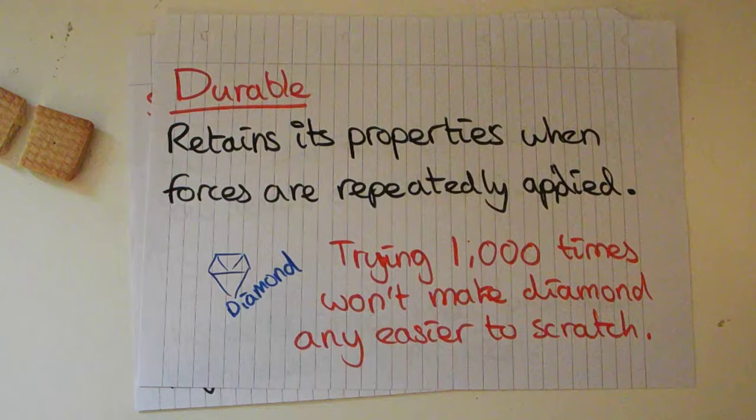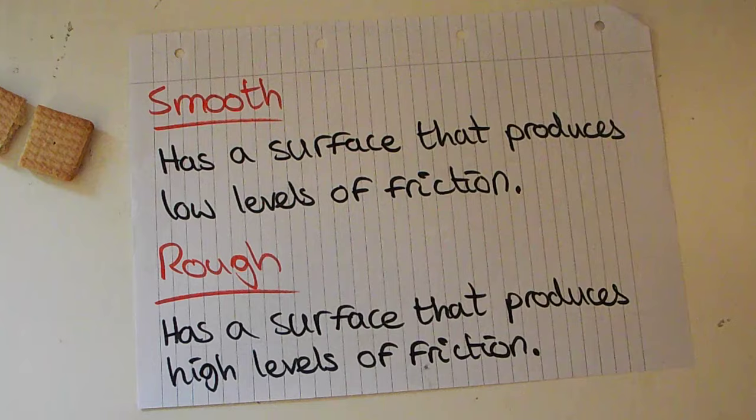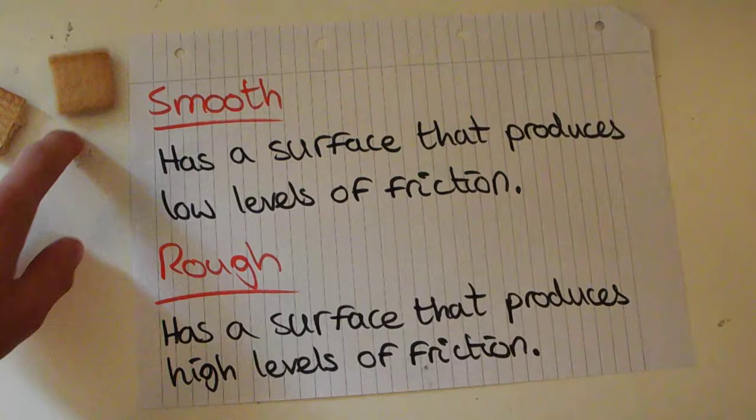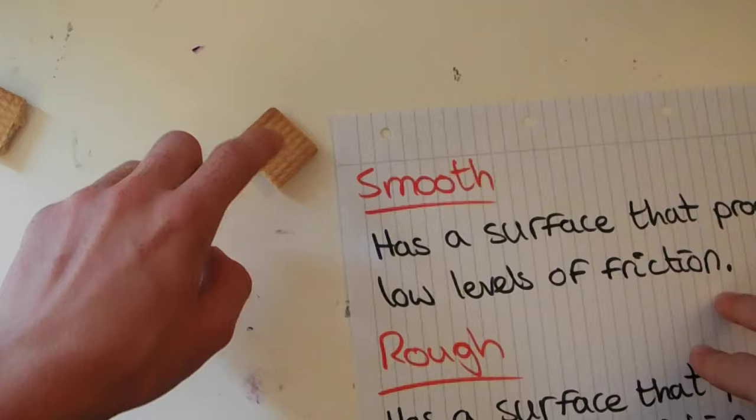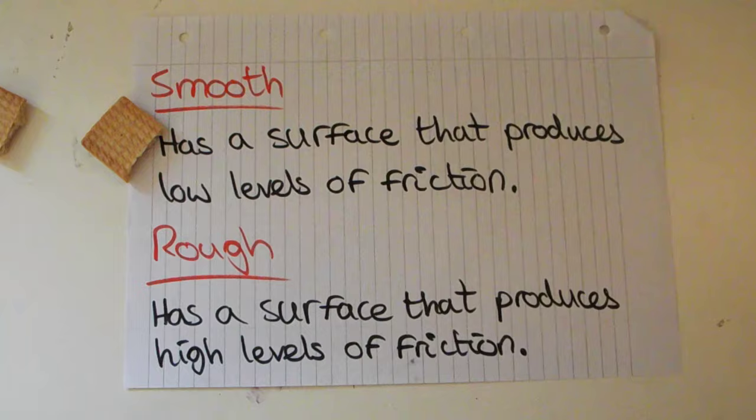The last two definitions are smooth and rough surfaces. A smooth surface doesn't produce very much friction — like this table, which produces quite a bit of friction but is smoother than sandpaper, which is very rough and produces very high levels of friction.